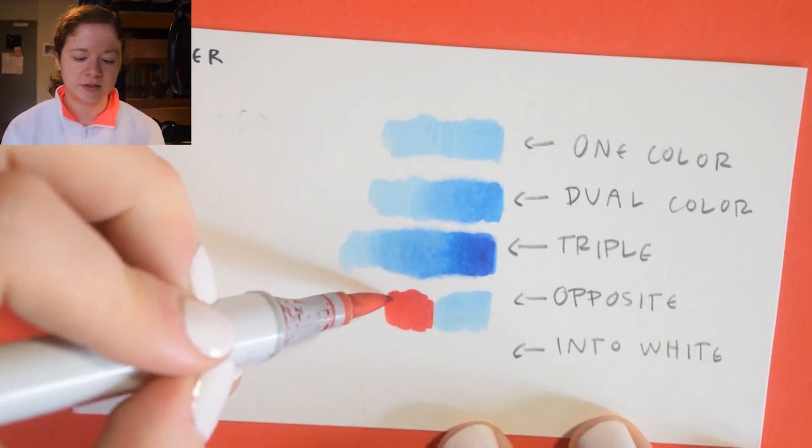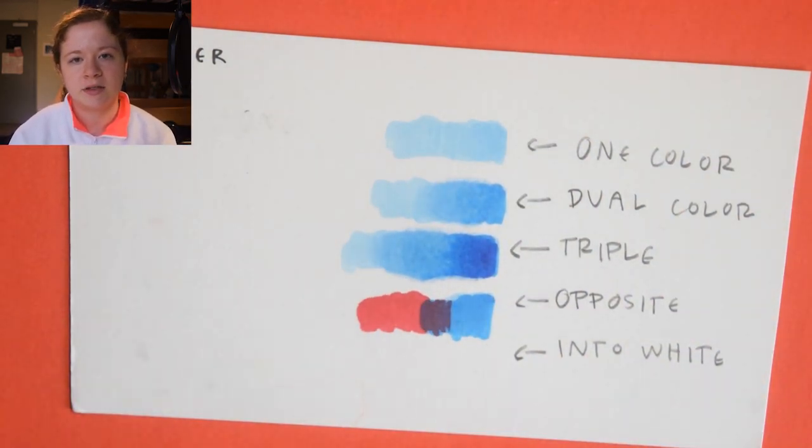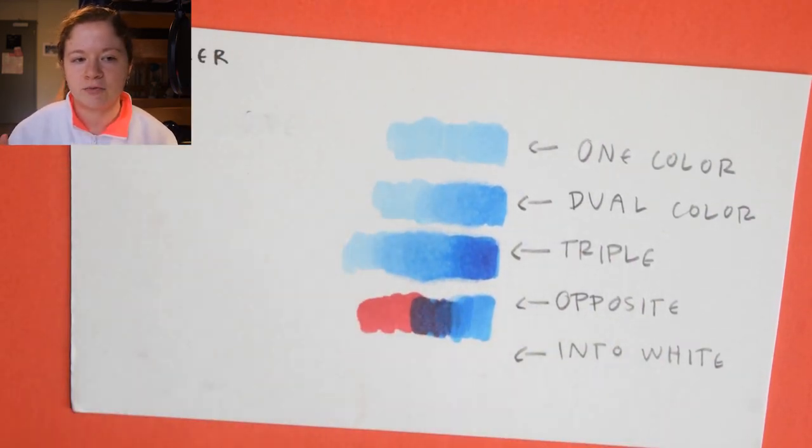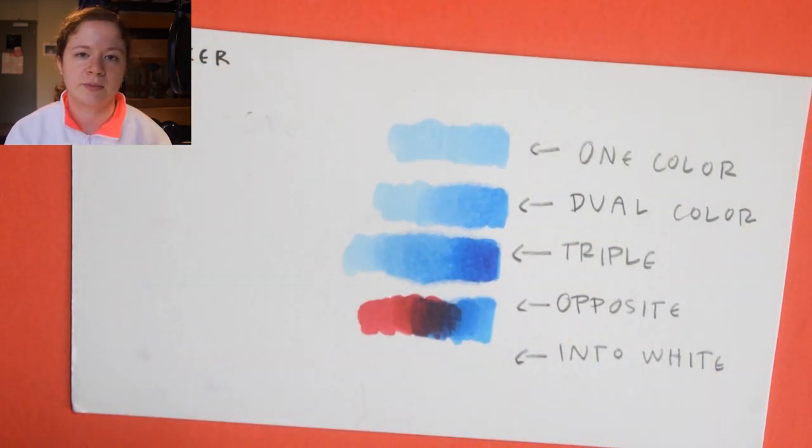For opposite colors, it's a lot like colored pencils. It's placing those two colors next to each other and then blending them into the middle to make one color. You can also take like, let's say I did a red and a blue, you could take a purple marker and put that in the middle which will help emphasize the purple in the middle.